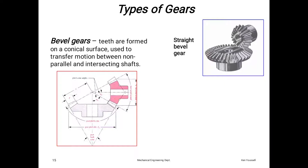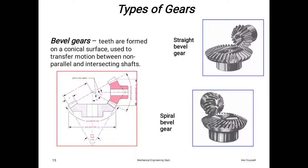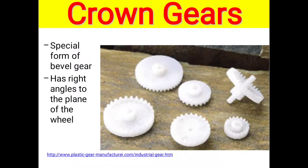Straight bevel gear—this is the example. Spiral bevel gear—this is the example. Comparing spiral and straight bevel gear, you see the difference: their teeth are cut in parallel manner in straight, and inclined in spiral. Crown gear: various images shown. Crown gear is a special form of bevel gear with right angle to the plane of wheel.